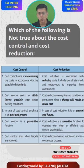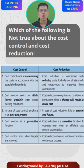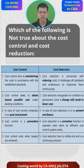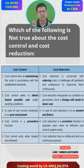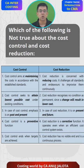Cost control ends when targets are achieved — once your actual cost is lower than the standard cost, the target is achieved and cost control ends. But cost reduction is always a continuing process.